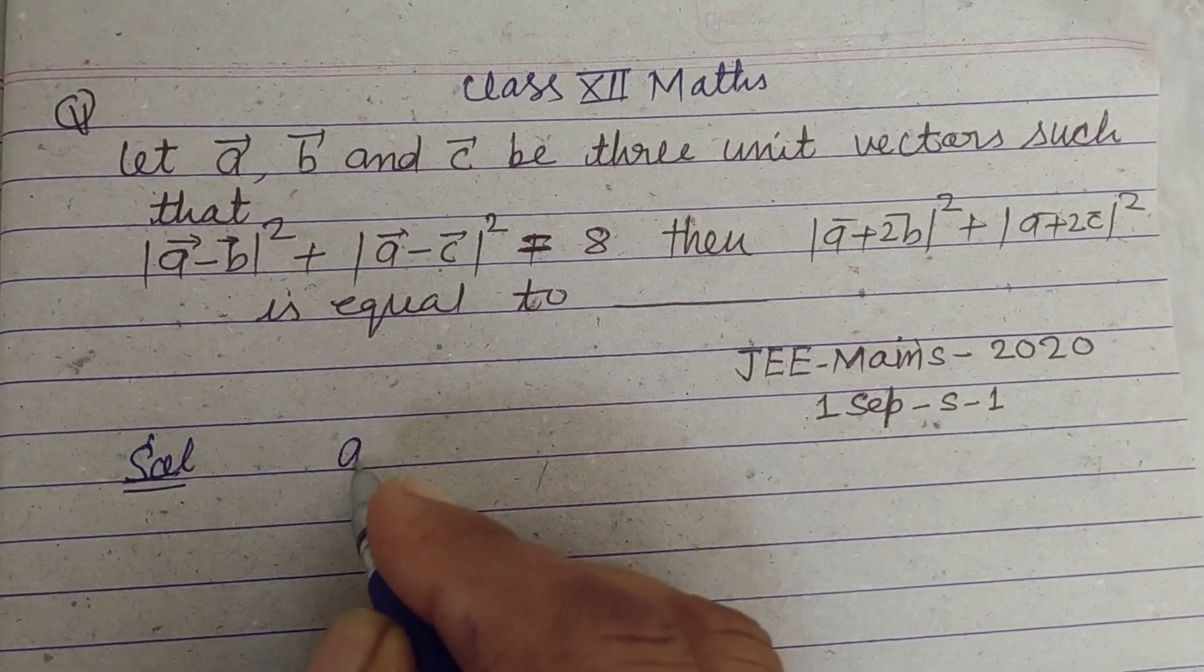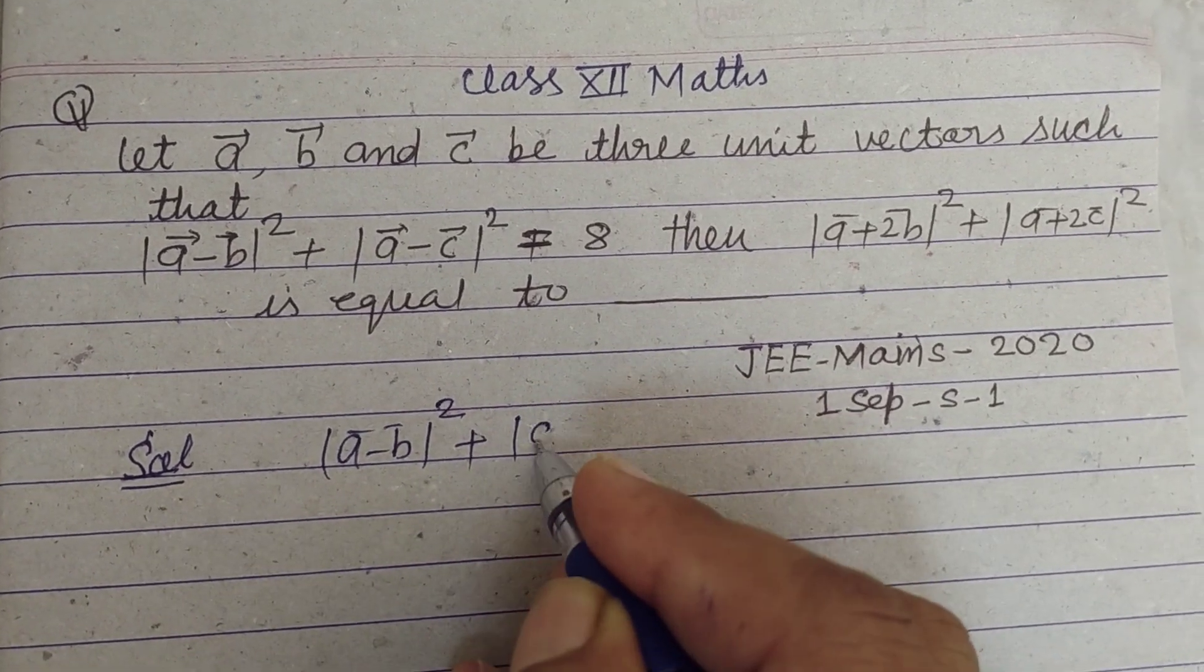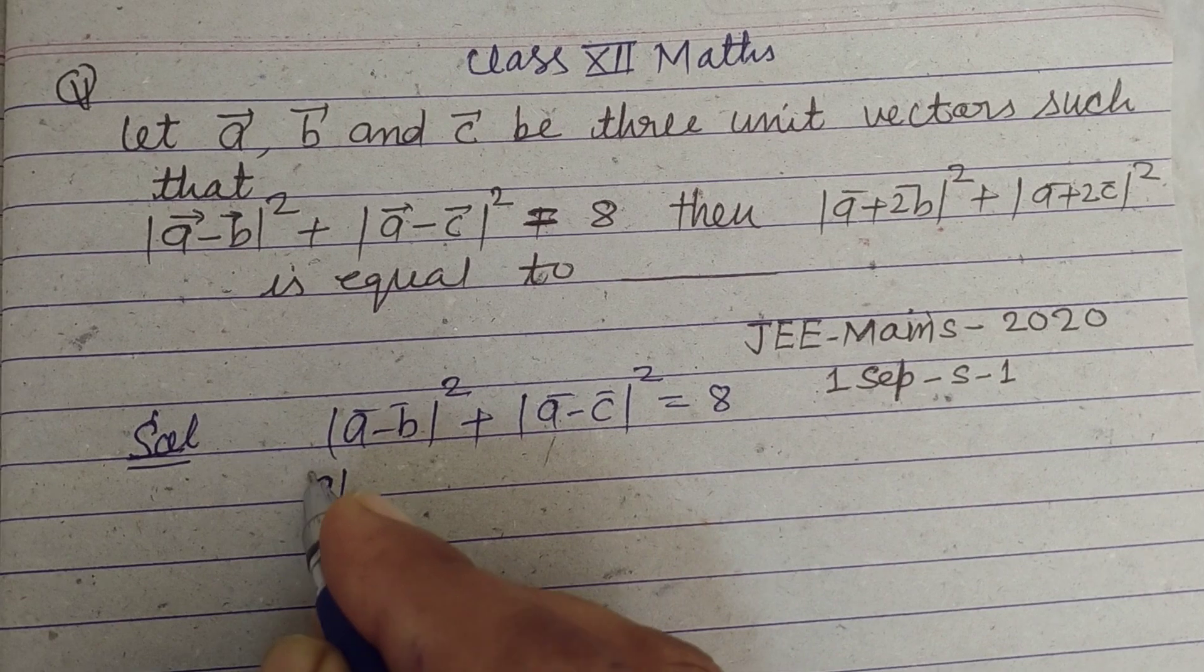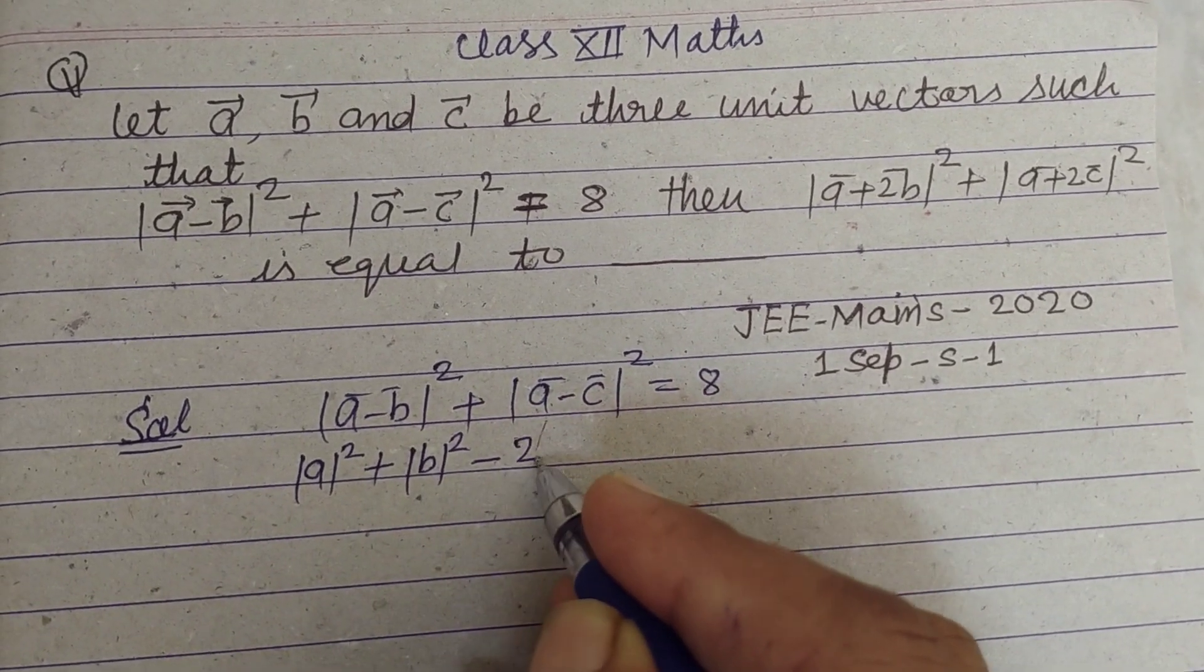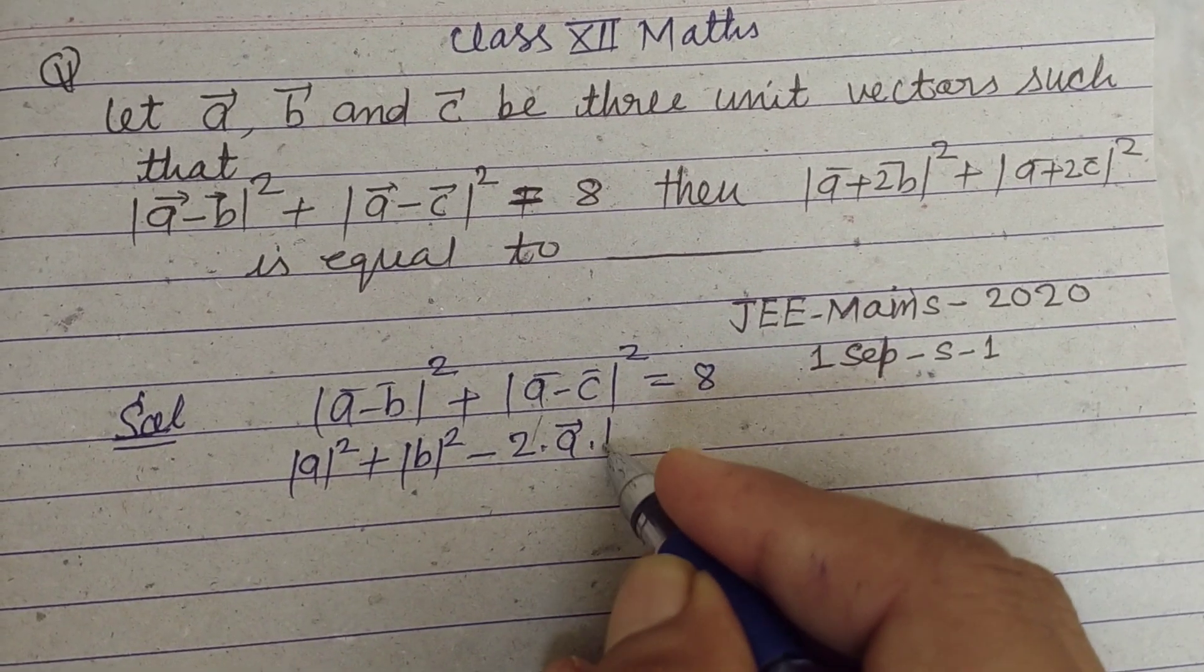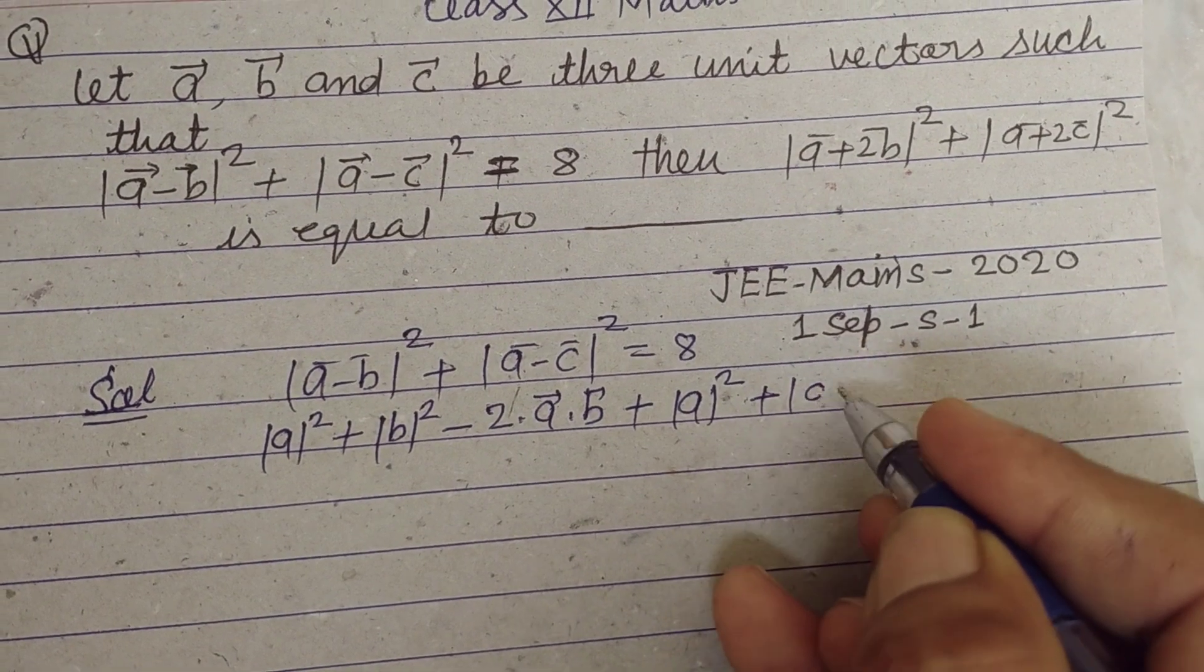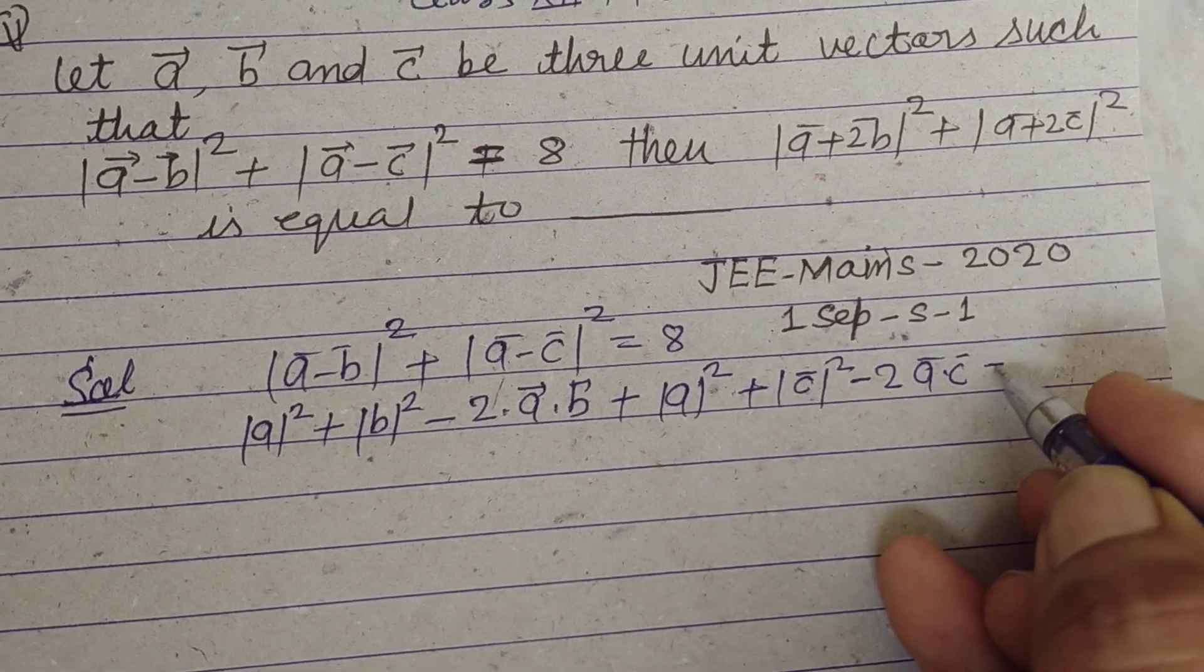So students, here it is given that mod of vector a minus b whole square plus mod of vector a minus c whole square is given to us as 8. So opening this: mod a square plus mod b square minus 2 times a dot b, now opening this: mod of a square plus mod of c square minus 2 times a dot c equal to 8.